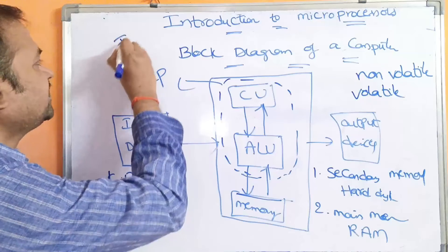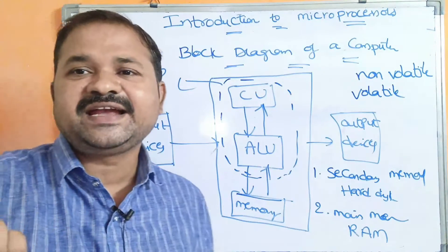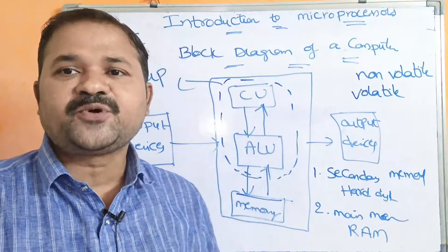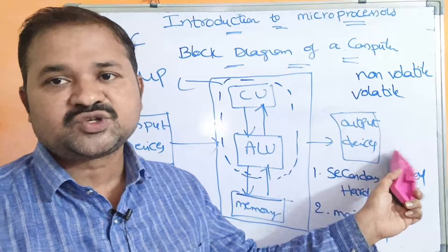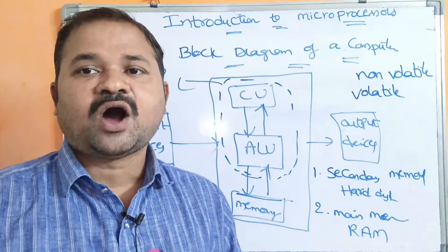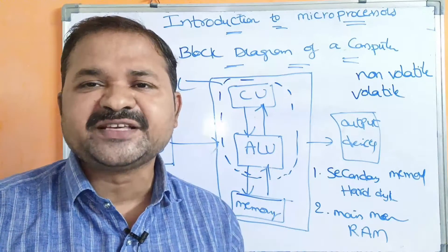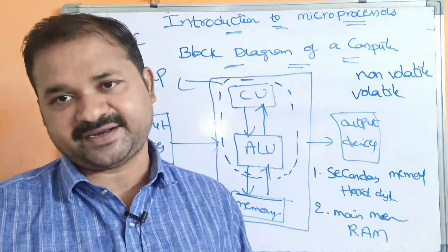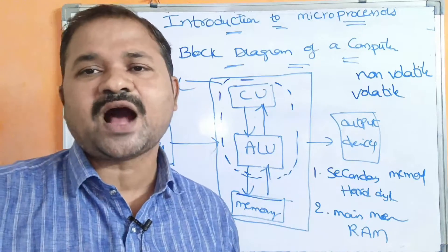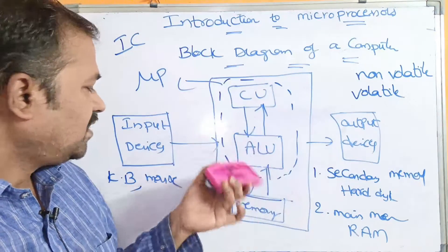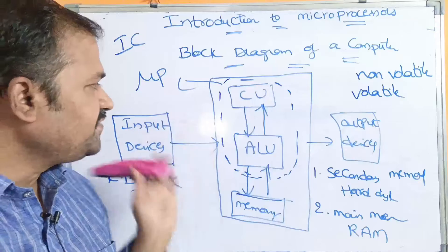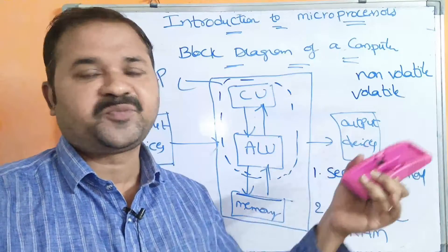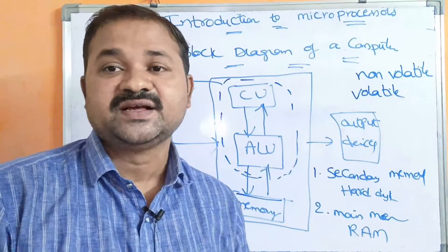Microprocessor is nothing but an IC — an integrated circuit chip. The processor executes the program and produces output, which is displayed with the help of output devices. Output devices are mainly useful to display information on the computer. The commonly used output devices are monitor and printer. So this is about the functionality of I/O devices, processor, and memory. This processor is nothing but a microprocessor, also called processor or central processing unit.